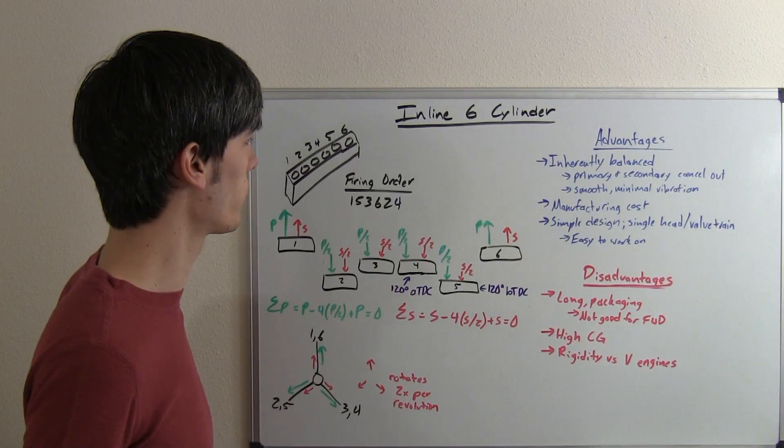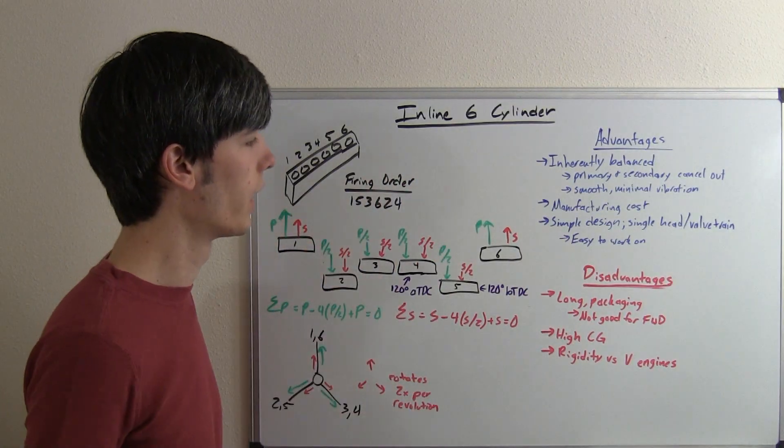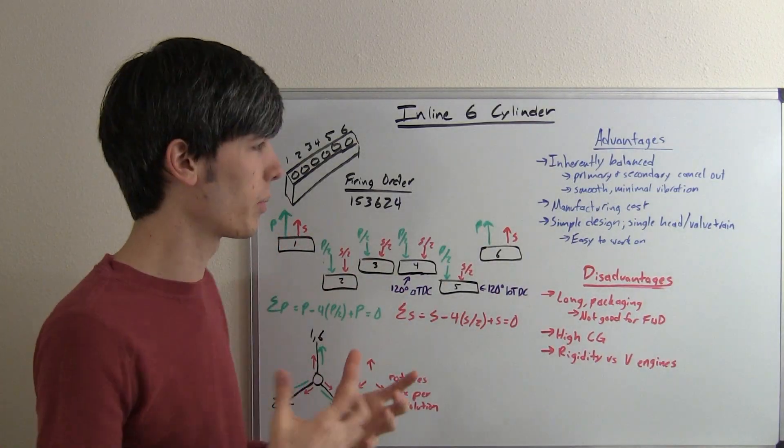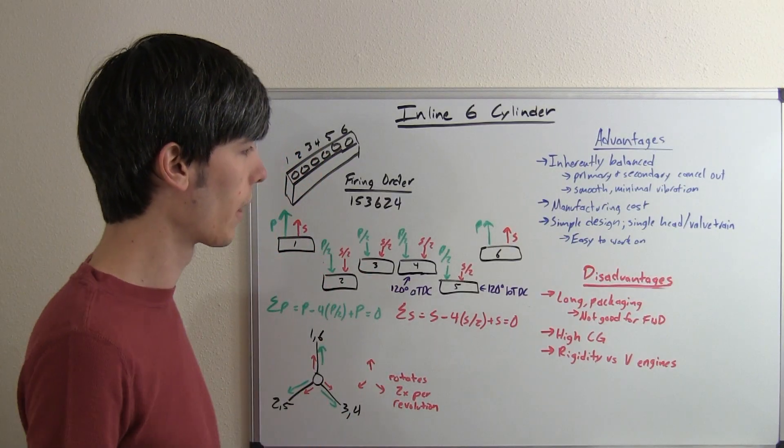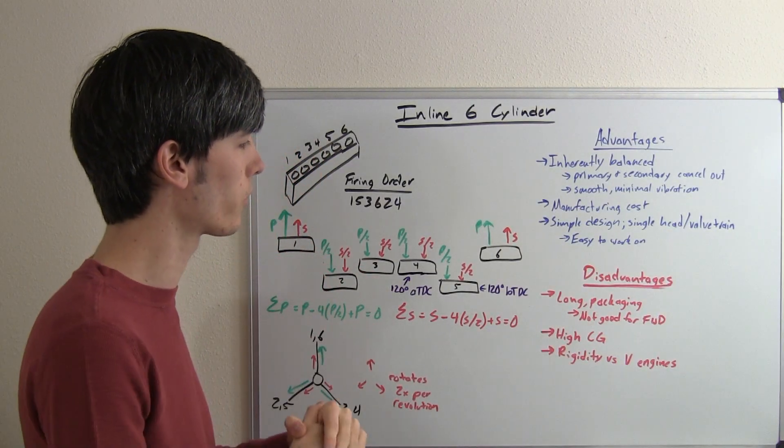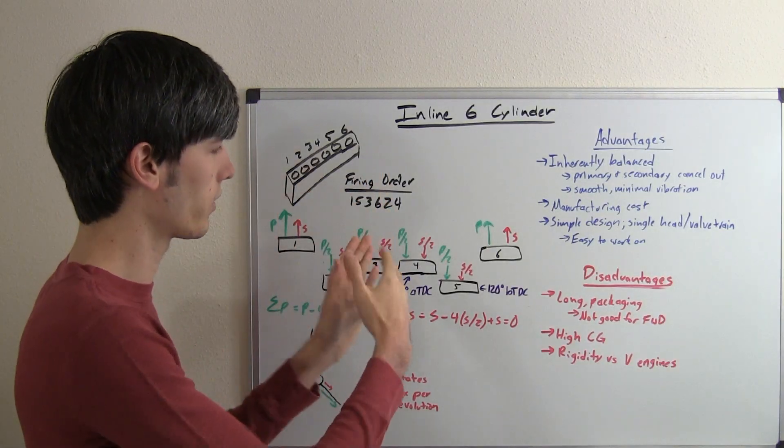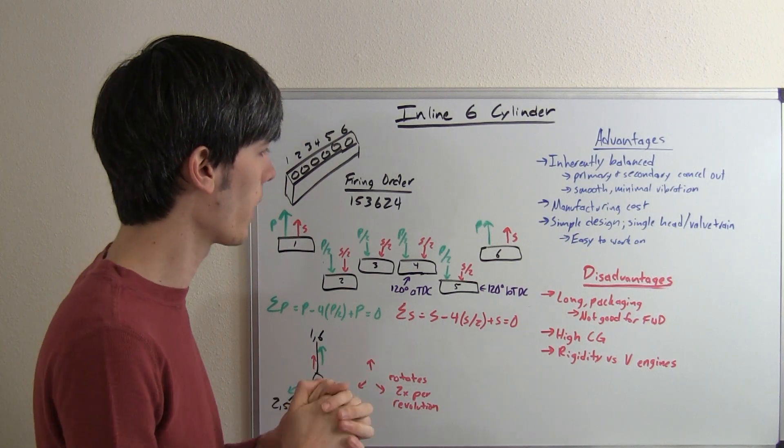So some of the disadvantages, of course there have to be some. Well, it's huge. It's a very long engine, and so by having this engine so long, the packaging is a bit difficult. So if you're trying to fit it into a fairly small engine bay, you're going to have some trouble. And also it's not going to be used for front-wheel drive vehicles very often because you want to have this sideways, and then you don't have any space to hook up your transmission and your axles.